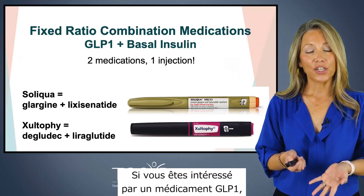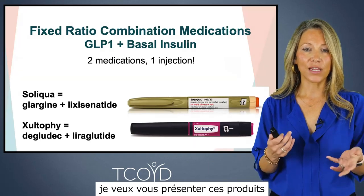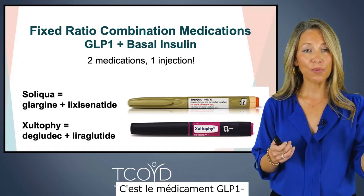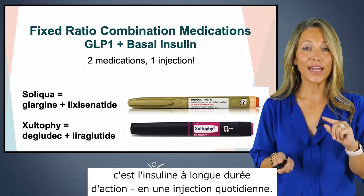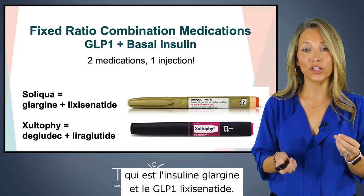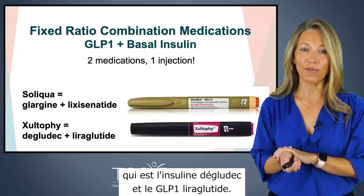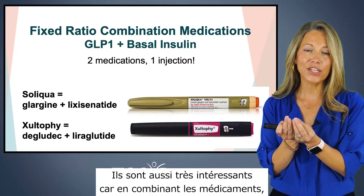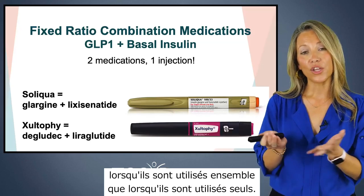If you're interested in a GLP-1 medication and you're also on or should be on insulin once a day, we have fixed ratio combination medications. This is a GLP-1 medication combined with a basal insulin — the long-acting insulin — in a once-a-day injection. You're getting two medications for one injection, which is pretty cool. We have two available: Soliqua, which is insulin glargine plus the GLP-1 lixisenatide; and Xultophy, which is insulin degludec plus the GLP-1 liraglutide. By combining the medications, you can also decrease side effects — a little less nausea and less hypoglycemia than when they're used alone.